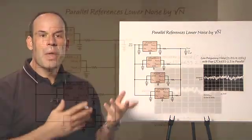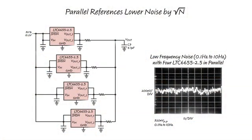For even lower noise, multiple LTC6655 devices may be wired in parallel as shown here. The noise is reduced with the square root of number of references, so this circuit has half the typical noise of one reference.